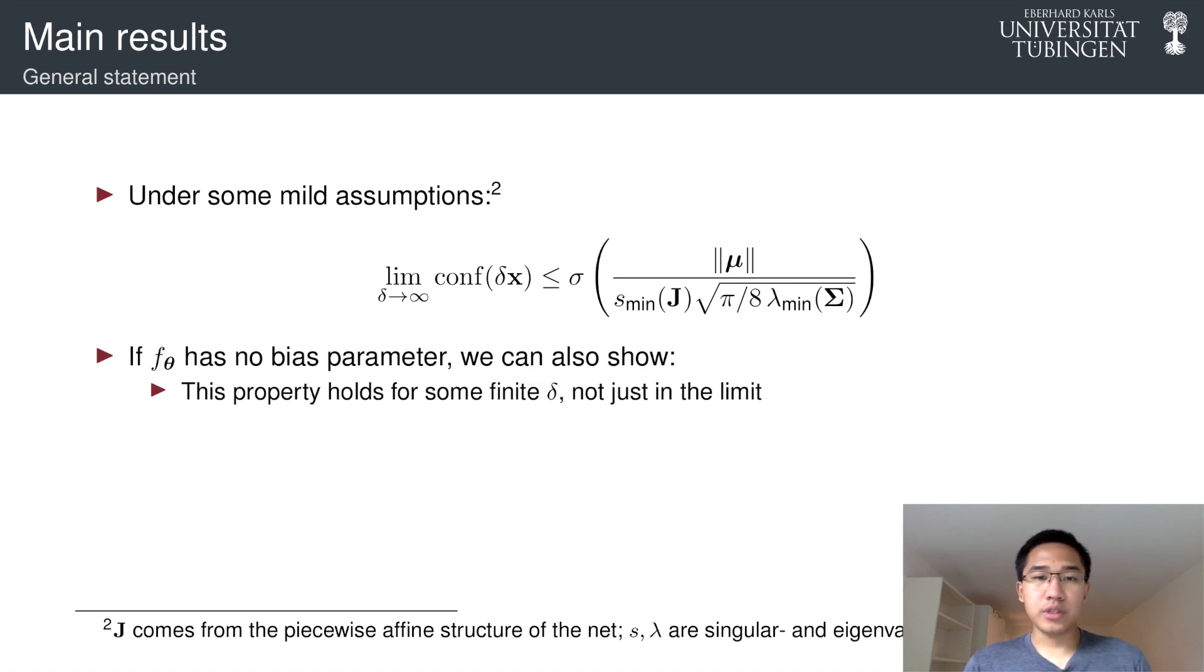So this is just a statement in the limit, but we can also have a stronger statement if we assume that f has no bias parameter. So this is just a simplifying assumption for convenience in analysis. But in empirical experiment, we always use bias and we can still observe the same property.